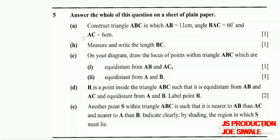Question A reads: construct triangle ABC in which AB is equal to 11cm, angle BAC is equal to 60 degrees, and AC is equal to 6cm. One mark. So I know that for me to construct this triangle I have been given a side, an angle, and a side. But in some cases you can be given 3 sides.